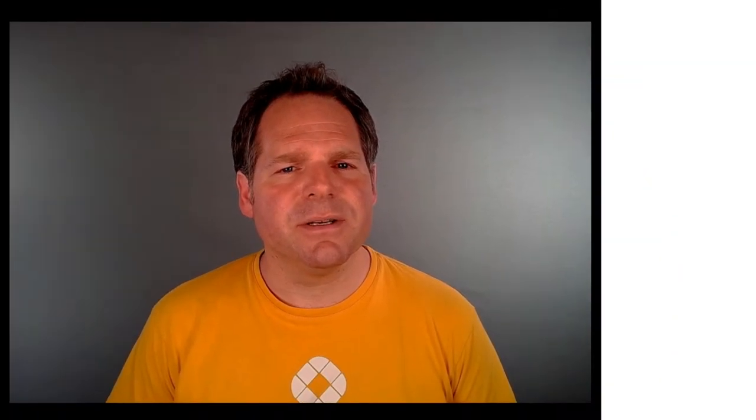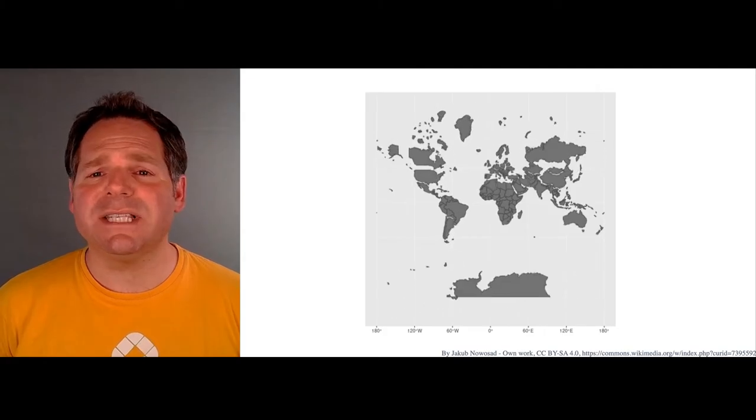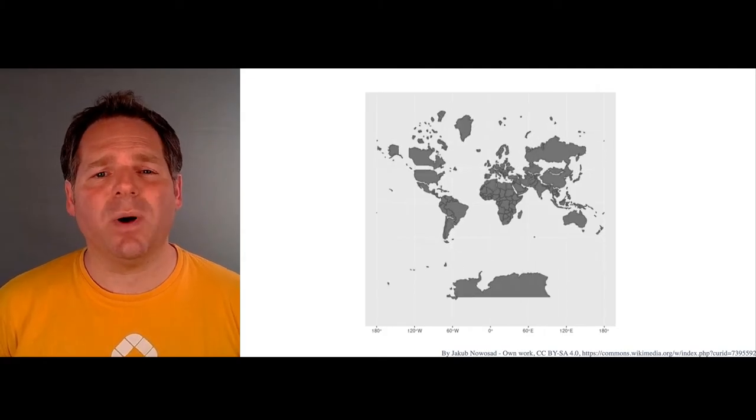Think back to the first Web Mapping Basics video. Here we said that Mercator maps are great for preserving shapes and directions, but greatly increase country sizes as you get nearer the poles.